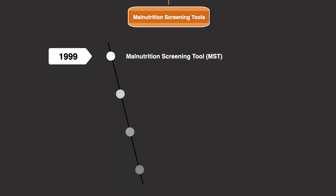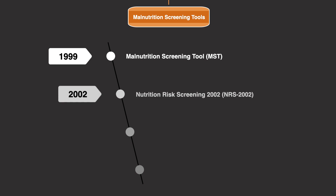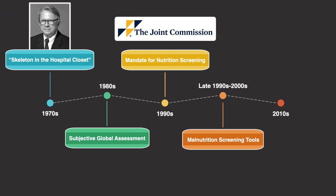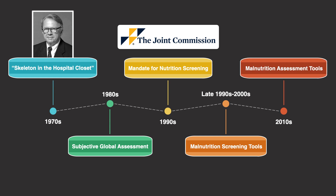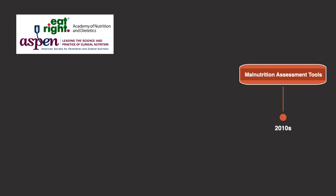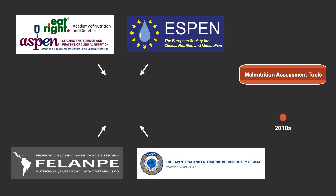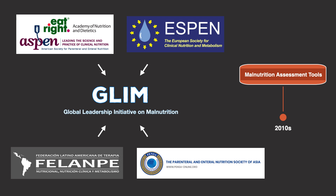Examples include the Malnutrition Screening Tool in 1999, the Nutrition Risk Screening 2002 in 2002, the Malnutrition Universal Screening Tool in 2003, and the Short Nutrition Assessment Questionnaire in 2005. Finally, in the 2010s we saw an expansion of malnutrition assessment and diagnostic tools. In 2012, the Academy of Nutrition and Dietetics and the American Society of Parenteral and Enteral Nutrition came together to establish their own criteria to assess for and diagnose malnutrition. This was followed by criteria published by the European Society of Clinical Nutrition and Metabolism in 2015. Then both organizations came together with other leading clinical nutrition societies to create the Global Leadership Initiative on Malnutrition in 2018.